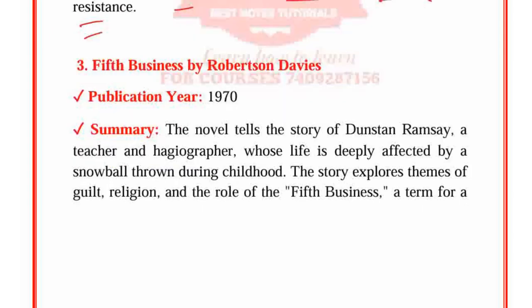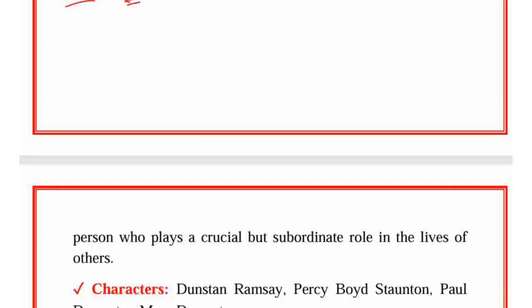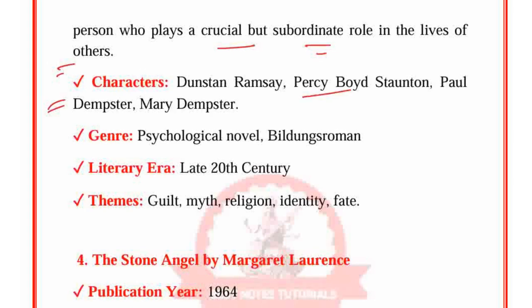Fifth Business by Robertson Davies, published in 1970. The novel tells the story of Dunstan Ramsey, a teacher and hagiographer whose life is deeply affected by a snowball thrown during childhood. The story explores themes of guilt, religion and the role of the 'fifth business' — a term for a person who plays a crucial but subordinate role in the lives of others. Characters: Dunstan Ramsey, Percy Boy Staunton, Paul Dempster, Mary Dempster. Genre: Psychological novel, Bildungsroman.